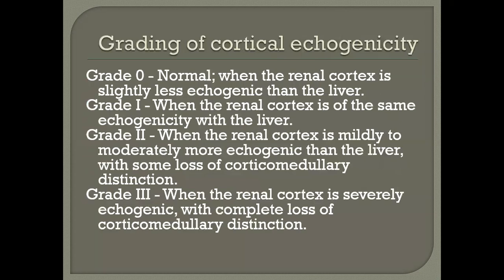We also have grading of cortical echogenicity when looking at the renal system affected by HIV. Grade zero is a normal kidney with a renal cortex that is hypoechoic compared to the liver. Grade one is where the renal cortex is isoechoic with the liver. Grade two is when the renal cortex is mildly to more directly echogenic than the liver with some loss of cortical medullary distinction. Grade three is where the renal cortex is severely echogenic with complete loss of cortical medullary distinction.